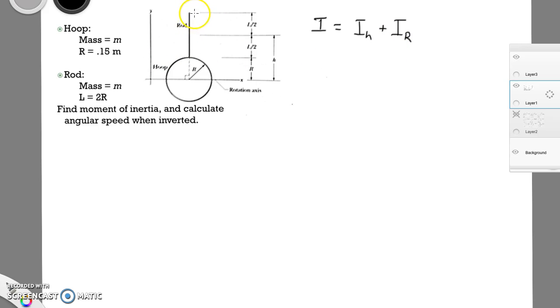So I of the hoop plus I of the rod. This rod, by the way, has a length of L, and that L is equal to 2 times R. We'll use that for this. This hoop has radius R. Also, notice that the center of mass of this rod has a height of 2R. Since this is not rotating about its axis, we're going to have to use the parallel axis theorem.